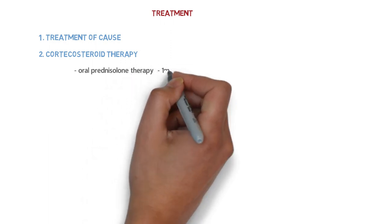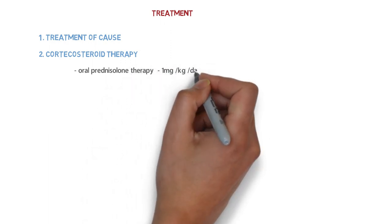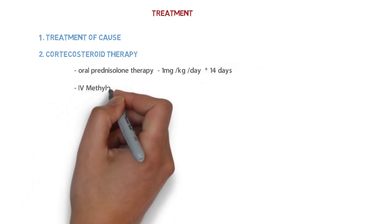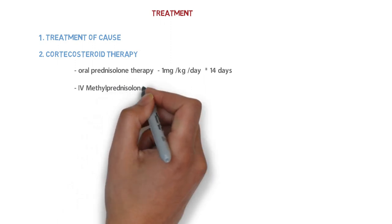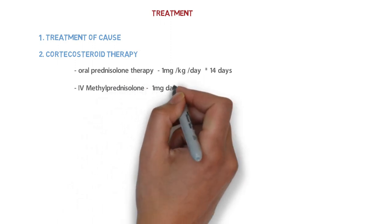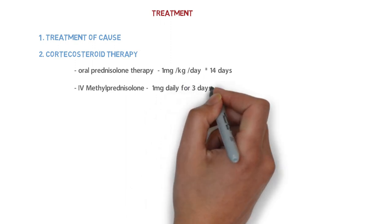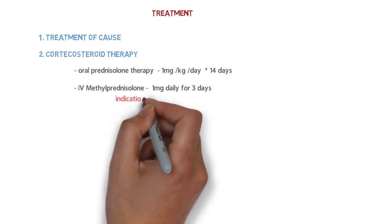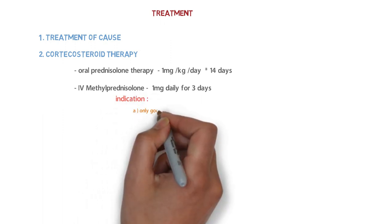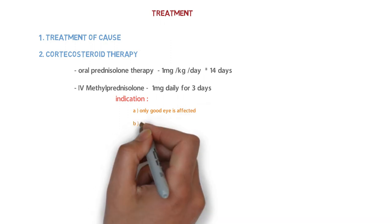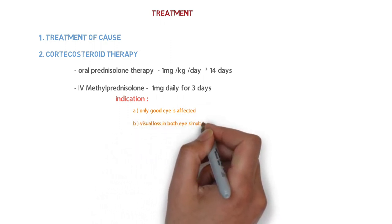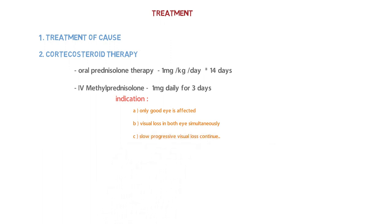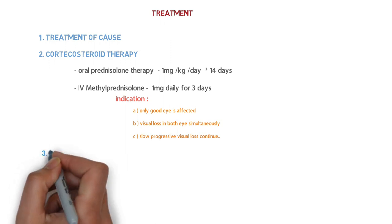In corticosteroid therapy we can use oral prednisolone therapy - oral prednisolone 1 mg per kg per day for 14 days. We can also give methylprednisolone intravenously, dose is 1 mg daily for 3 days. The indications for IV methylprednisolone are: if only the good eye is affected, vision loss in both eyes simultaneously, and if slow progressive vision loss continues.